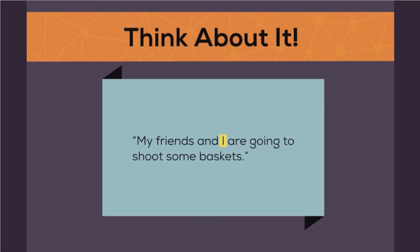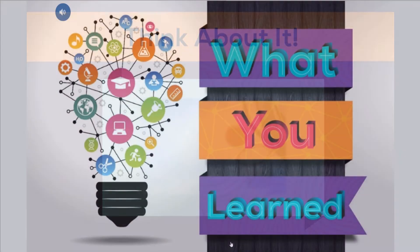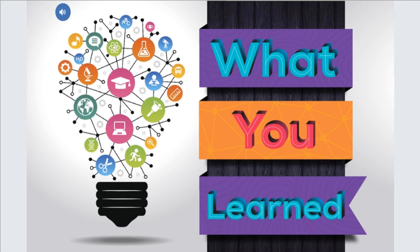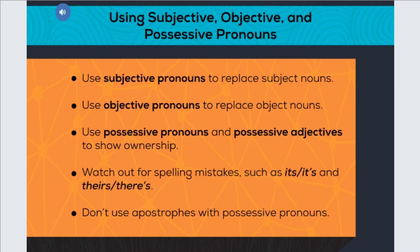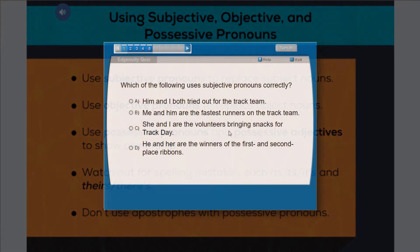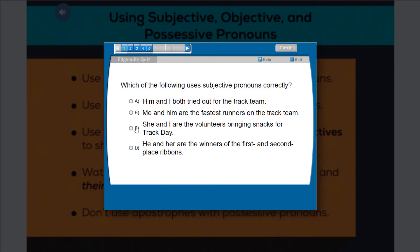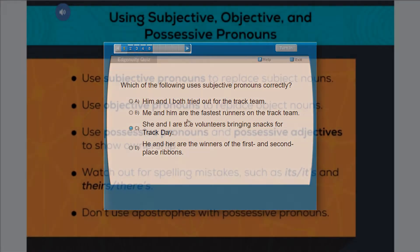Let's skip ahead to the recap at the end of the lesson. Good job learning how to use subjective, objective, and possessive pronouns. Let's recap what you learned. The conclusion summarizes and reinforces the information that was presented in this lesson. You learned how to use subjective pronouns to replace subject nouns. Upon completion of a lesson, there is often a quiz available to the student. These are optional and may or may not be utilized according to your teaching style.